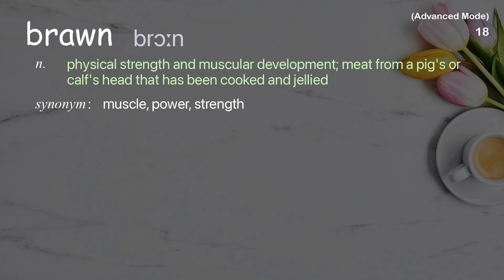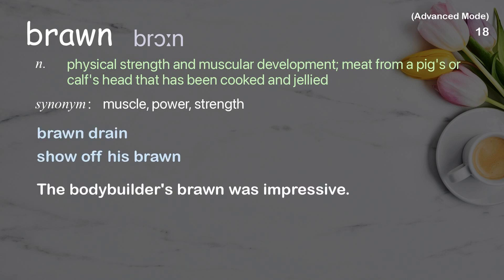Brawn: Physical strength and muscular development. Also, meat from a pig's or calf's head that has been cooked and jellied. Examples: Brawn drain. Show off his brawn. The bodybuilder's brawn was impressive.